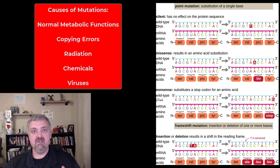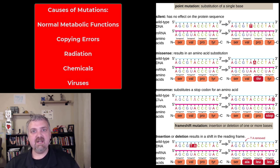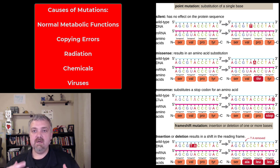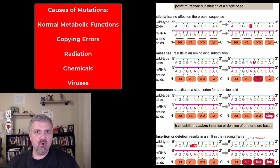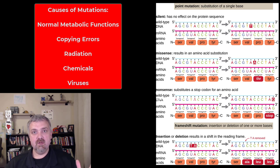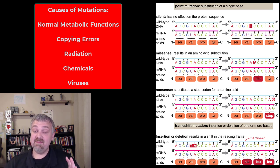Mutations are caused by our normal metabolism, like free radicals and reactive oxygen species. Regular copying errors are going to occur, as well as UV radiation, gamma rays, X-rays, and chemical mutagens. Mutagens are anything that increase mutation rates. Viruses also contribute. So mutations come from all over the place, but thankfully most are repaired.